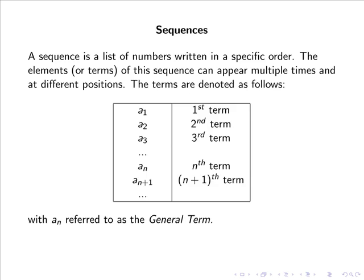The terms are denoted as follows: a₁ is the first term, a₂ the second term, a₃ the third term, aₙ the nth term, aₙ₊₁ the n+1 term and so forth, with aₙ referred to as the general term.